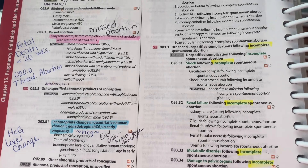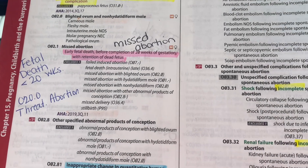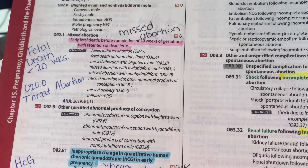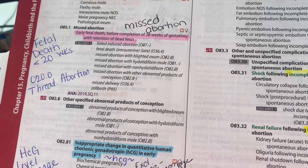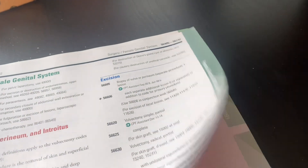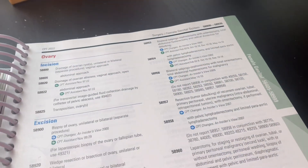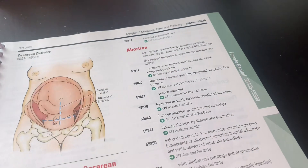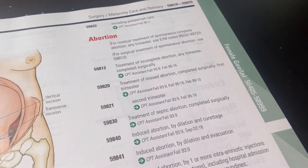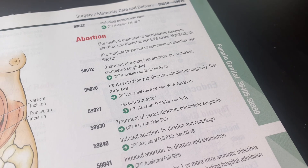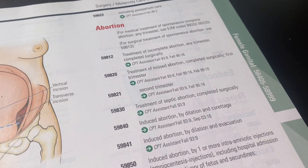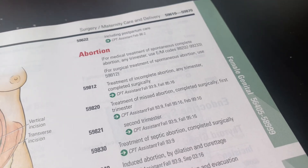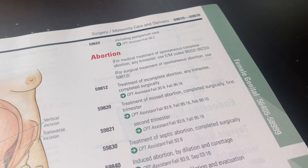Next up is an outpatient surgery for a missed abortion. I've used diagnosis code O02.1. Because this was a missed abortion, the patient did not have any vaginal bleeding, so this was not an incomplete abortion. I'm going to use the treatment of a missed abortion — she was between six and seven weeks, so this would be the first trimester. My CPT code is 59820.